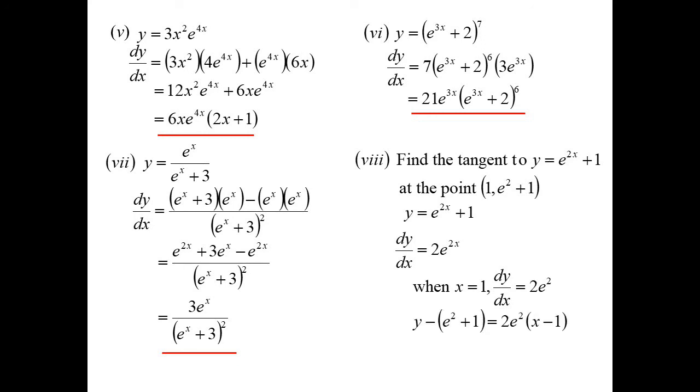So y minus y1 is equal to the slope, 2e squared, x minus x1, so minus 1. Tidying all that up, I've put it in general form. So 2e squared x minus y minus e squared plus 1 equals 0.